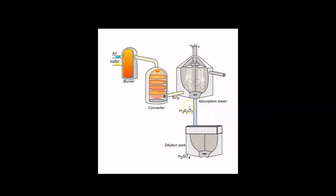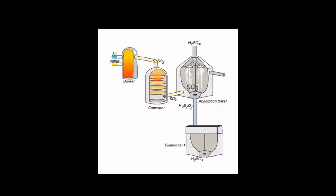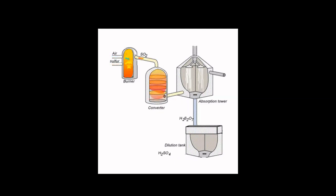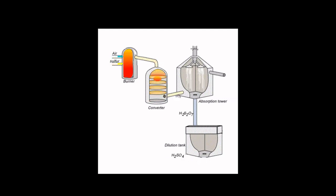So to summarize: we have methane from the Step Pyramid, ammonia from the Red Pyramid, ammonium bicarbonate from the Bent Pyramid, and here in the Great Pyramid of Giza we are producing sulfuric acid.